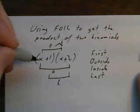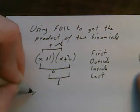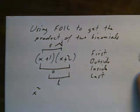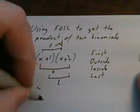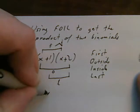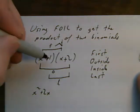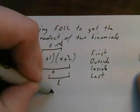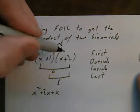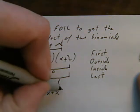So let's do this. First, x times x is x squared. Outside, x times plus 2 is 2x. Inside, 1 times x is x, and last, 1 times 2 is 2.